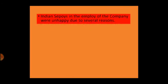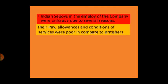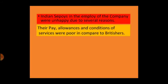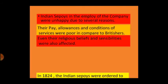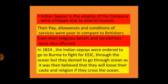The Indian sepoys in the employ of the company also had reasons for discontent. They were unhappy because of their pay, allowances, and conditions of service. Some new rules violated their religious sensibilities and beliefs. In 1824, the Indian sepoys were ordered to go to Burma to fight for the East India Company through the ocean, but these soldiers denied crossing the ocean as they believed they would lose their caste and religion by doing so.